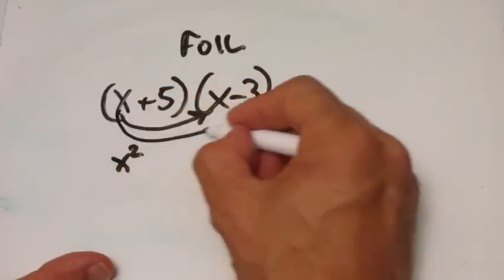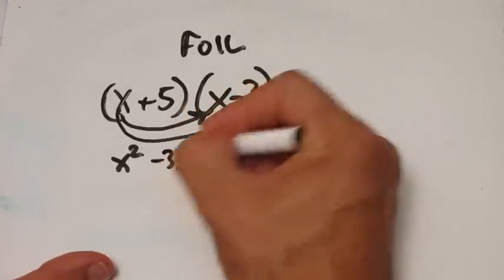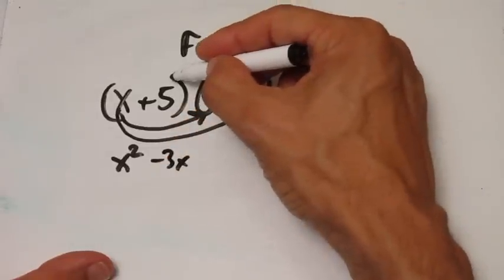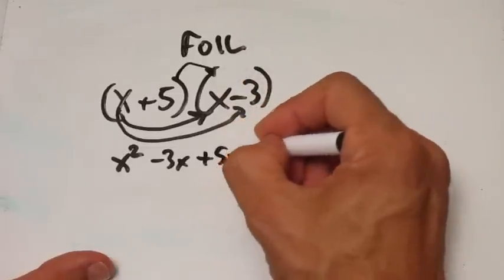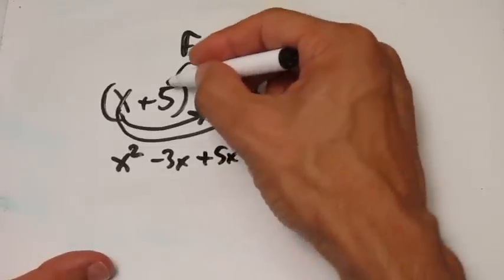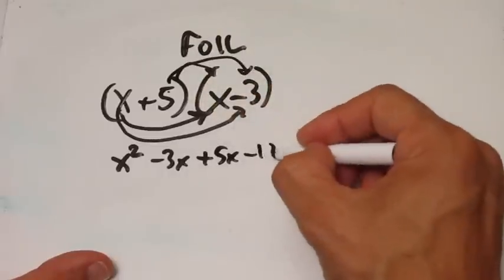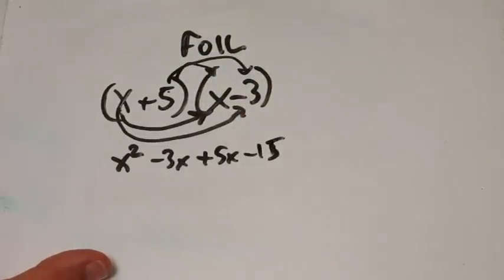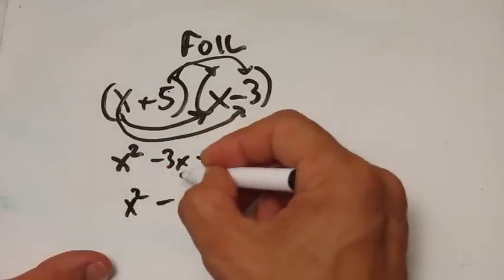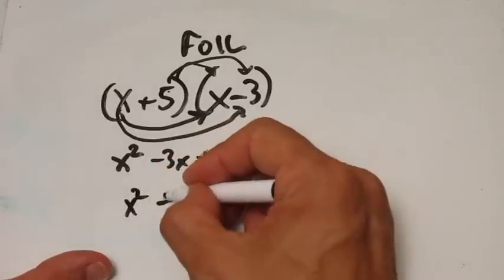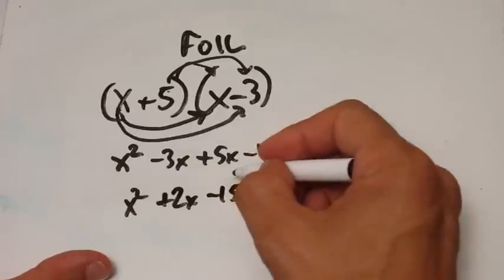The Outer term is x times negative 3, so you have minus 3x. Then the Inner term is 5 times x, giving you 5x. And then the Last term — the last term here times the last term there — gives you negative 15. Now you just add up the common terms: x squared minus 3x plus 5x gives you positive 2x minus 15. And there's your answer.